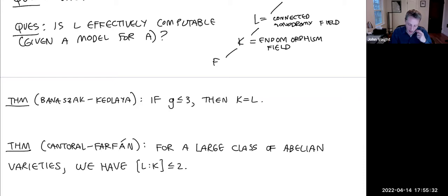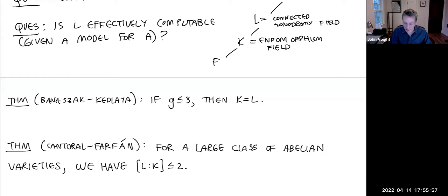The next theorem which got us involved in this three-person collaboration is a theorem of Cantoral-Farfán: for a large class of abelian varieties, the degree [L:K] is at most 2. A preprint is forthcoming; I can't say more about the precise class right now, but it includes the family we'll be considering below in the explicit construction announced in the title.